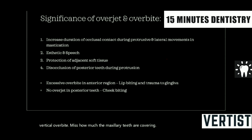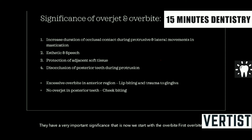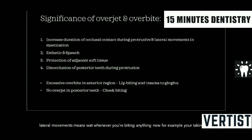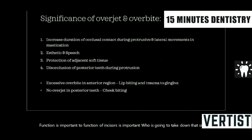Overjet and overbite have very important significance. Starting with overbite: overbite is important because it increases the duration of occlusal contact during the progressive lateral movement. Whenever you are biting, for example, taking a small bite of a bread slice, the incisor-like action created by the incisors is important. This is only possible because of the overbite.